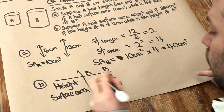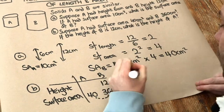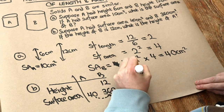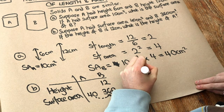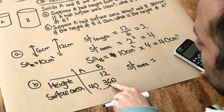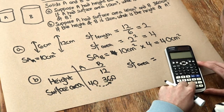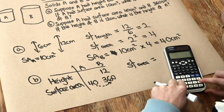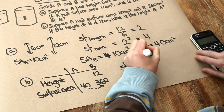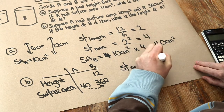We can see the scale factor of surface area. We can just divide those two numbers to see how many times bigger one is than the other. So we do 360 divided by 40, which is 9. So the scale factor of area is 9.